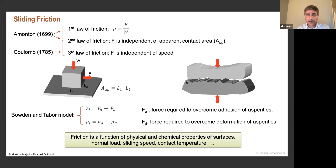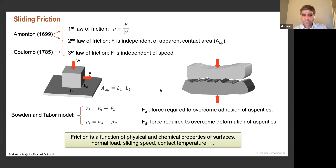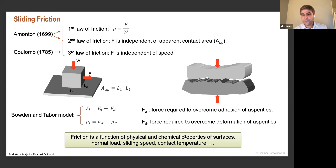Looking at the micro-scale level, Bowden and Tabor proposed a more detailed model of friction behavior between two surfaces. When they looked at the microstructure of two surfaces with a given roughness, they proposed that the total friction force has two components: adhesion of asperities between two surfaces, and deformation of the asperities. They also stated that friction is a function of physical and chemical properties of surfaces.